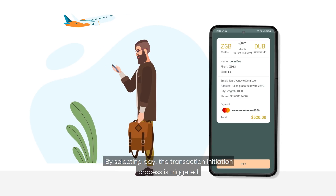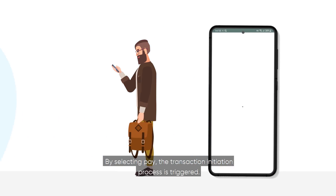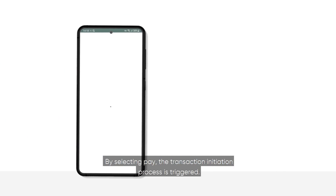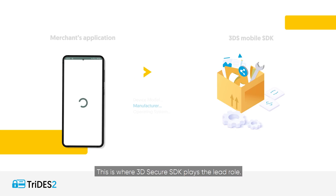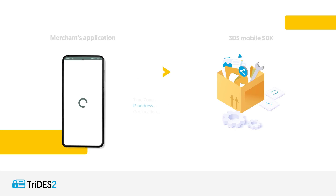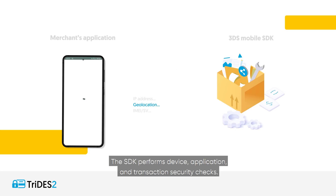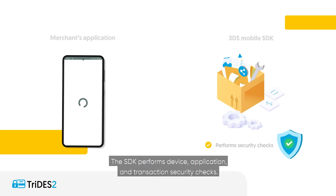By selecting Pay, the transaction initiation process is triggered. This is where the 3D Secure SDK plays the lead role. The SDK performs device, application, and transaction security checks.